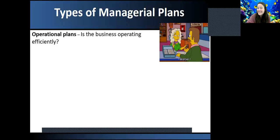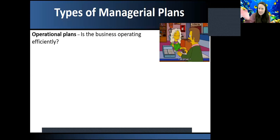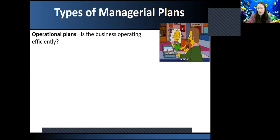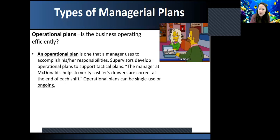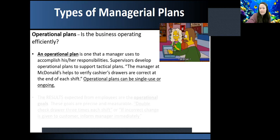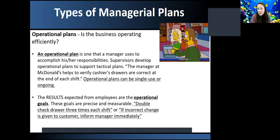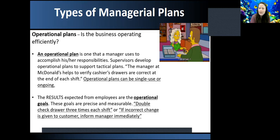Operational plans are day-to-day activities — setting goals for each day and figuring out how you're going to reach those goals. For example, maybe your manager at McDonald's helps to verify the cashier's drawer at the end of each shift. A goal would be to double-check the drawers three times a shift, and if incorrect change is given, then inform the manager immediately.